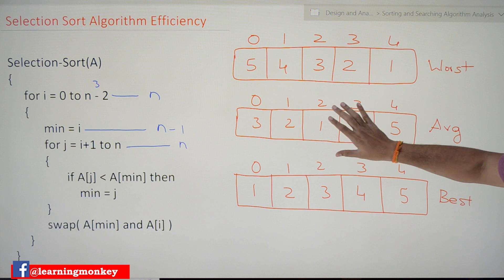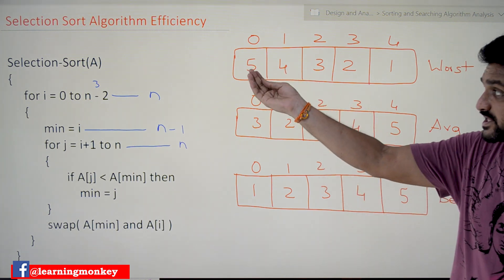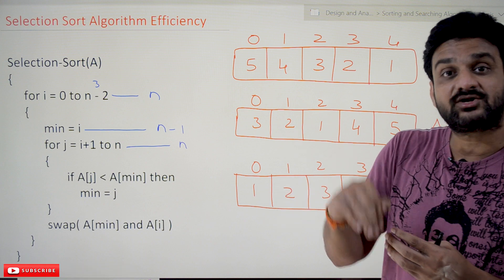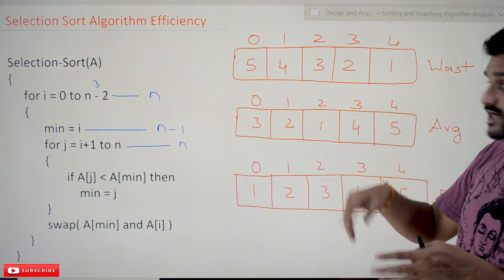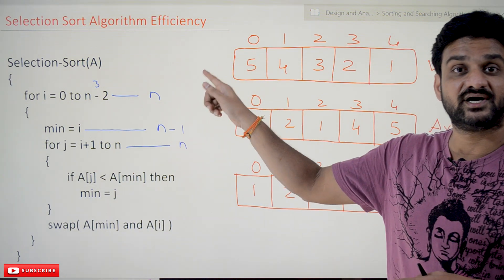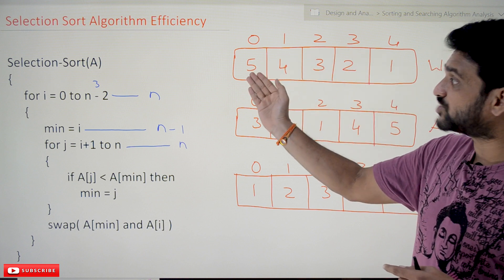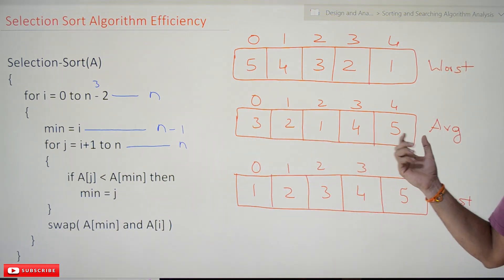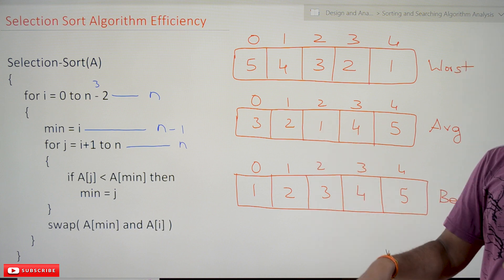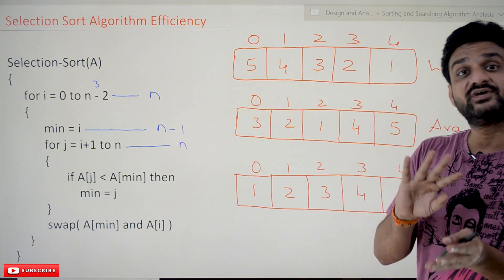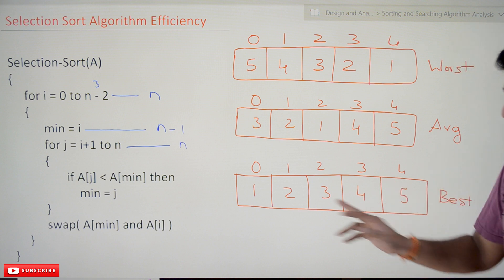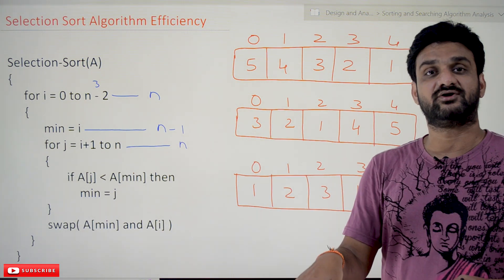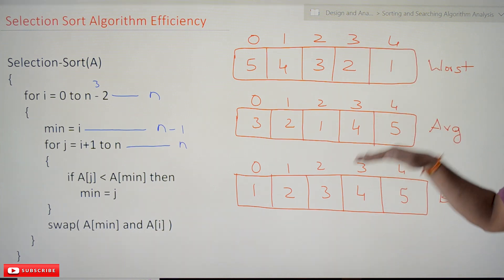We will consider three different cases: worst case, average case, and best case. Worst case means the elements are arranged in reverse order — since we want to sort in increasing order, the input is in decreasing order, so it takes the most time. Average case means some elements are already in their correct position and some are not. Best case means the elements are already in sorted increasing order.